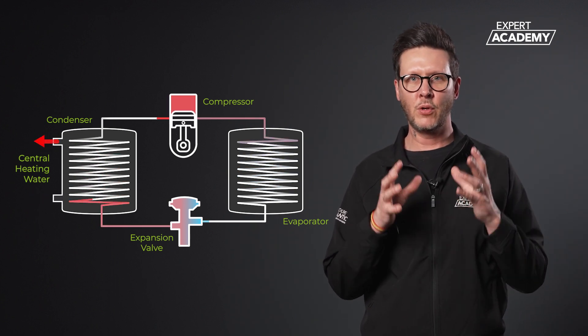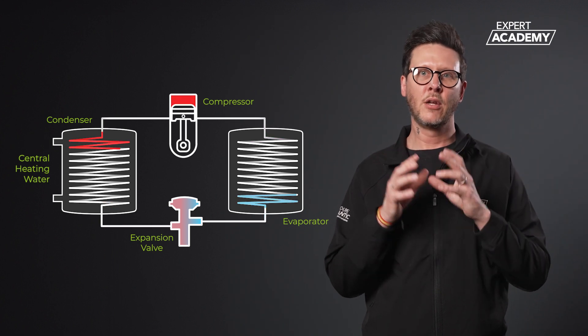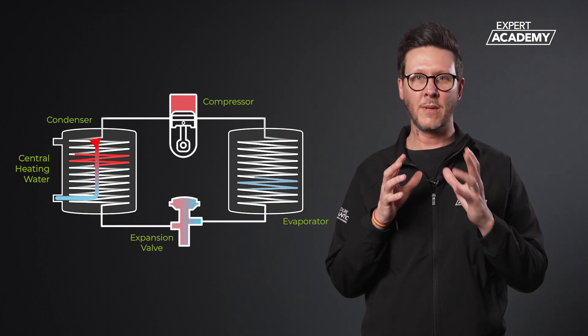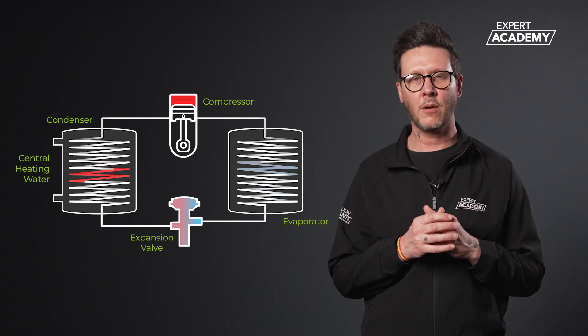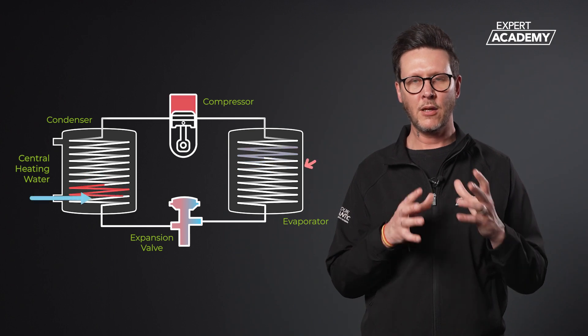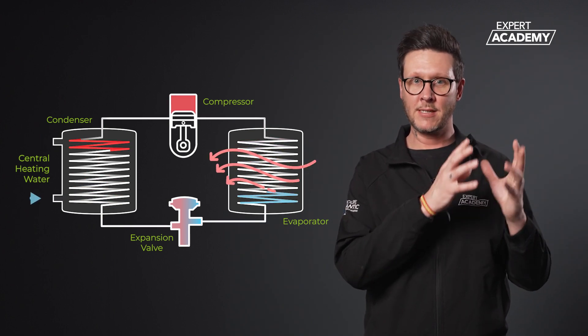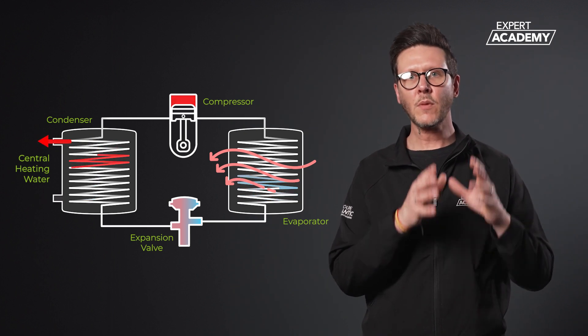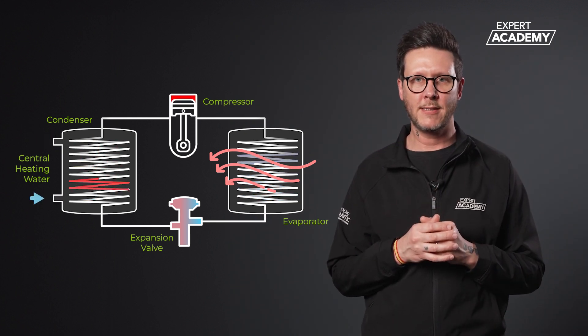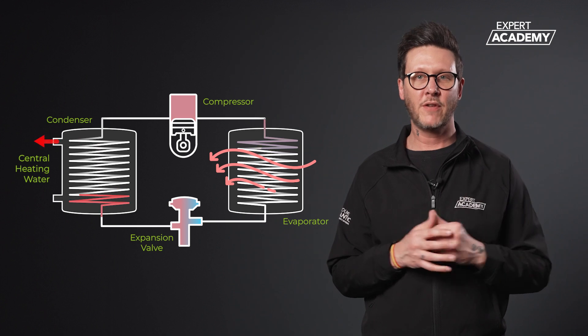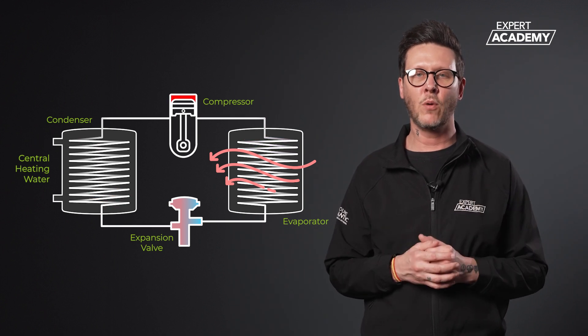This process involves using units of electricity to drive the compressor, which manipulates the pressure across the vapor compression cycle. It utilizes the heat energy from the outdoor air and a refrigerant as the medium for transfer, resulting in an increased output unit of heat. This makes it a very efficient method of heating our homes and water.